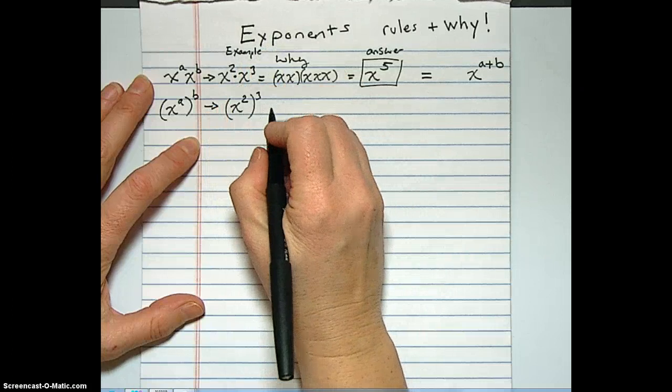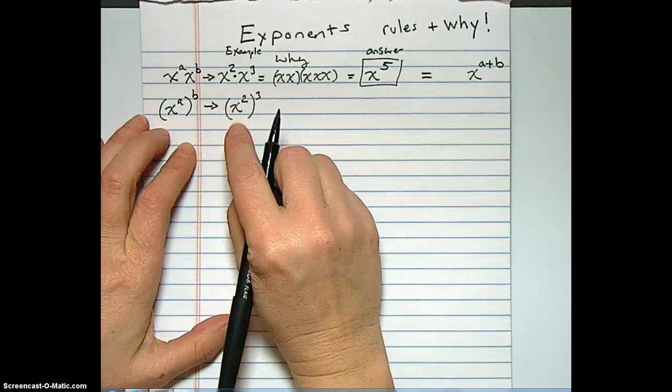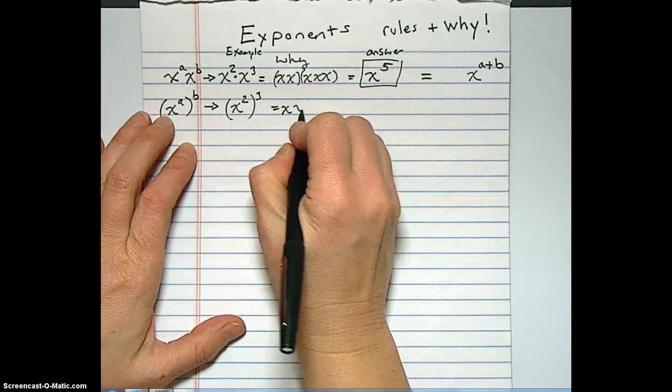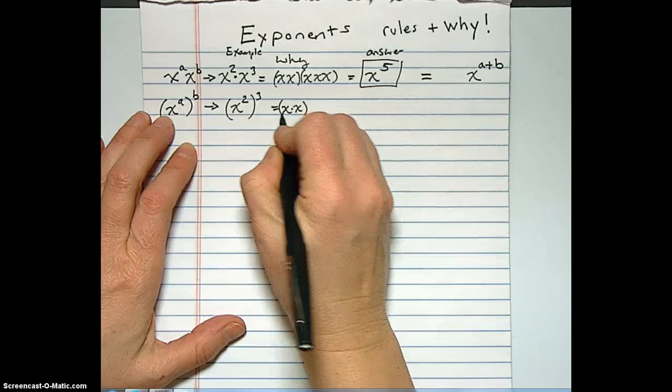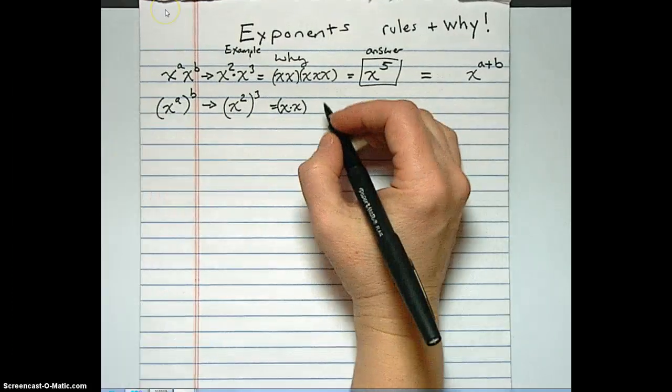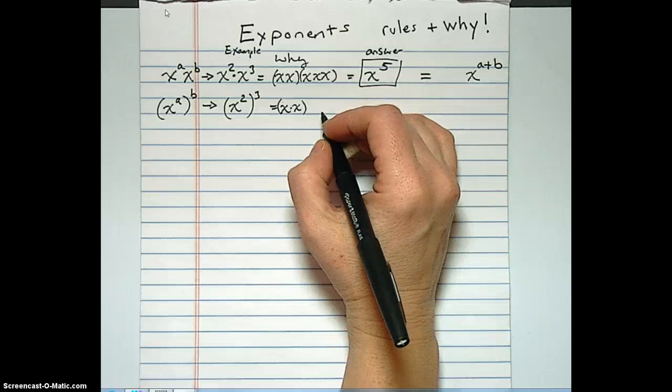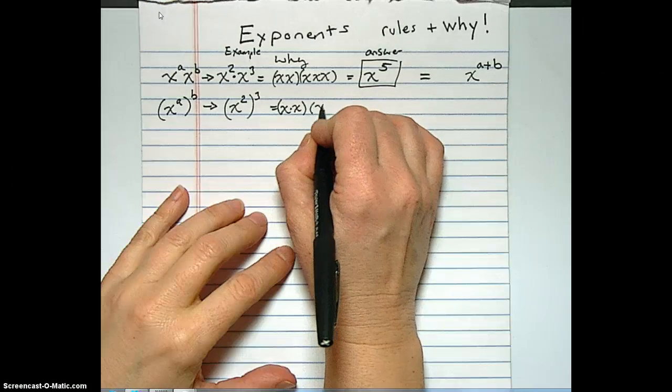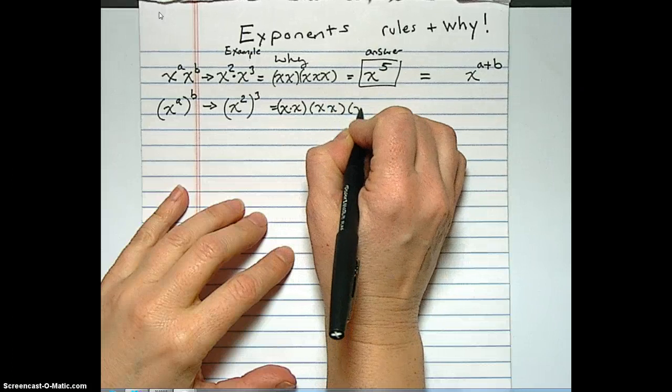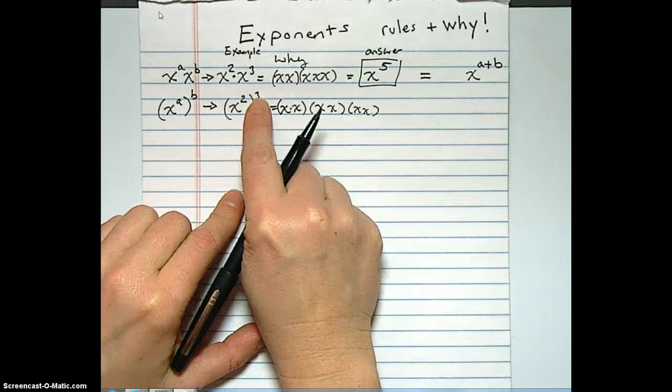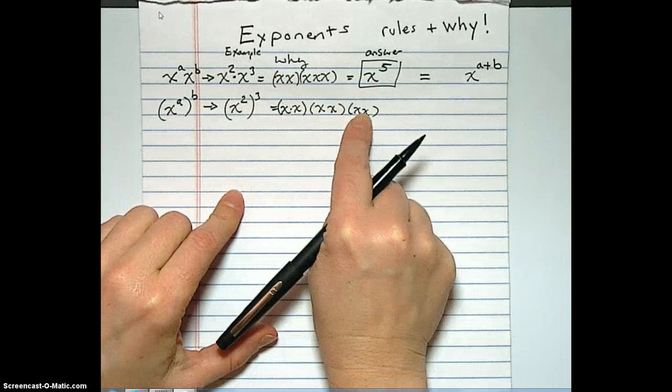Alright, so x squared to the third. So x squared is what? x times x. x times x. x times x. And what is that to the third power? There's three x squares. There's three x squares. Okay, so here's one of the x squares. Let's make another one. And then another one. So there we've got x squared, x squared, x squared. Because it was x squared to the third power. So here's our three x squares.